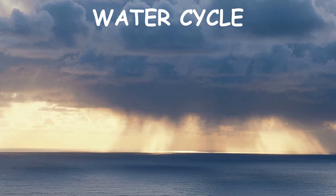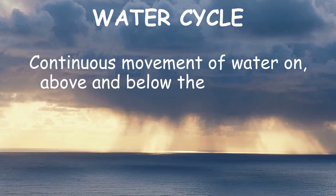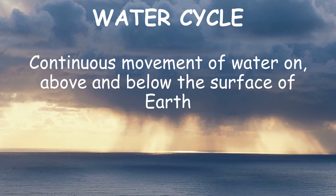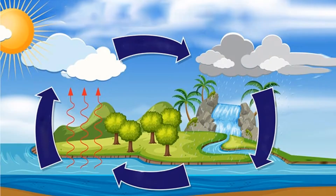The water cycle is the continuous movement of water on, above, and below the surface of Earth. All the water that exists on Earth has existed for a long, long time and has been recycling over and over. This continuous movement of water, passing from liquid to gas to solid and so on, is what we call the water cycle.